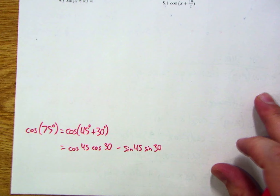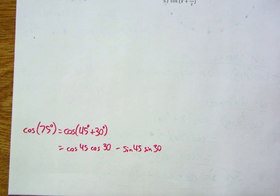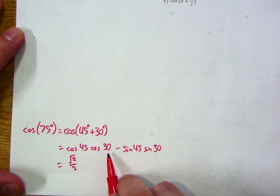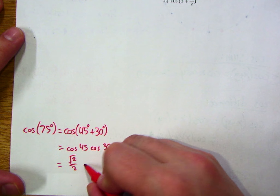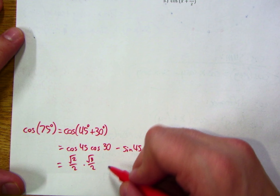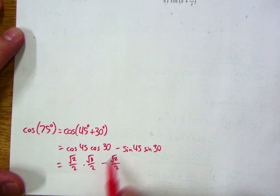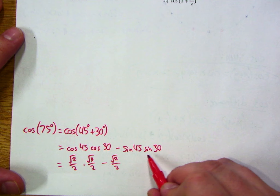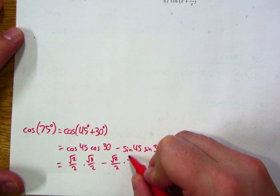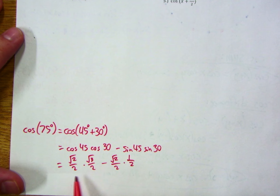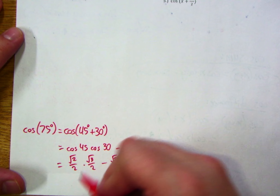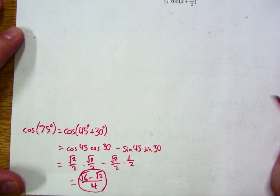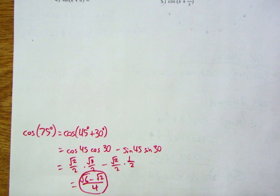Thinking about these angles as locations on the unit circle: 45 degrees has an x-value of √2/2; cosine of 30 degrees is √3/2; sine of 45 is √2/2; and the y-value at 30 degrees is 1/2. So we get (√2/2)(√3/2) minus (√2/2)(1/2), which gives √6/4 minus √2/4, or (√6 − √2)/4. That is the cleanest way to express the cosine of 75 degrees.